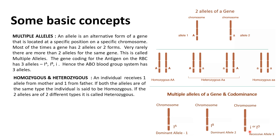The next concept is homozygous and heterozygous. Every individual receives one allele from the mother and one from the father. If both alleles are of the same type — for example both capital A's or both small a's — such individuals are called homozygous for capital A or for small a. If one allele is capital A and the other is small a, that is if both alleles are of two different types, then such an individual is called heterozygous for capital A and small a.